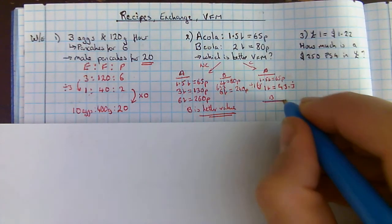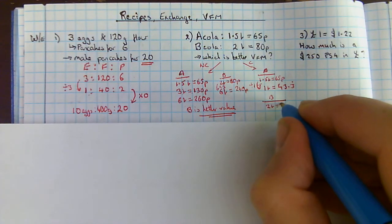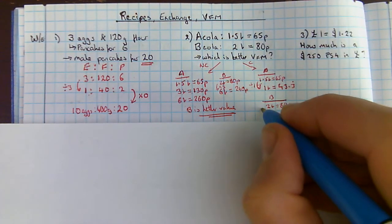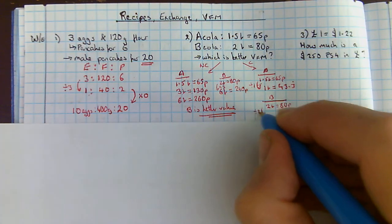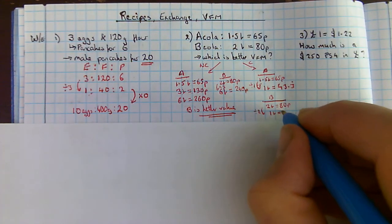65 divided by 1.5 is going to give me 43.3 recurring pence. B, I've got 2 litres equals 80p. I don't need to reach my calculator here. Divide by 2. Tells me 1 litre is 40p.